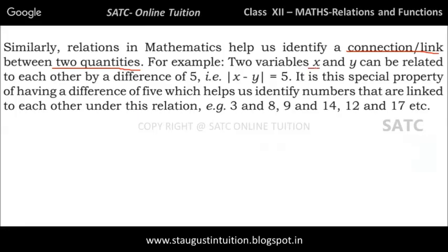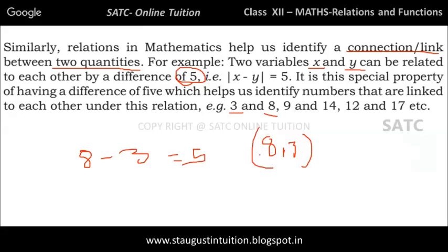For example, two variables x and y can be related to each other by a difference of 5. Take the example of 3 and 8: 8 minus 3 is equal to 5. So 8 and 3 are related because if you subtract one number from another, you get 5. Suppose this number is x and this number is y, then the relation is x minus y is equal to 5.